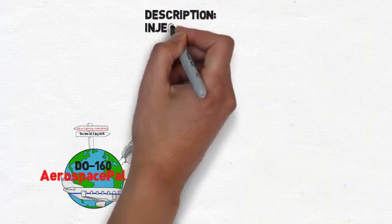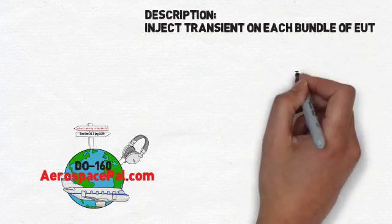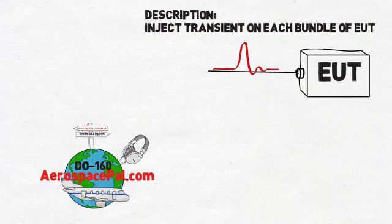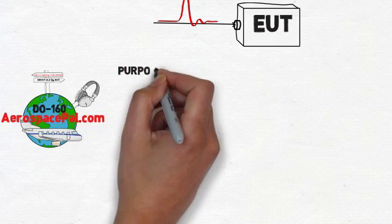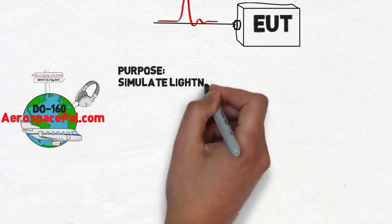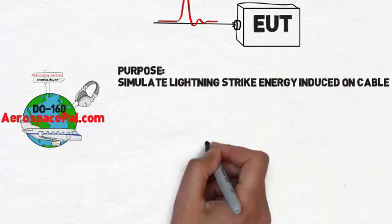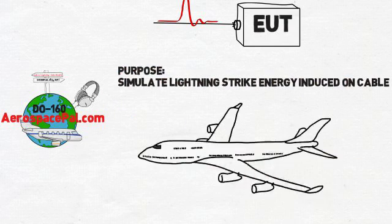Now during this test, we're going to inject a transient waveform on each bundle of your EUT. The purpose of this test is to simulate the energy from a lightning strike that will be induced onto your cable and represented on each bundle of your product.